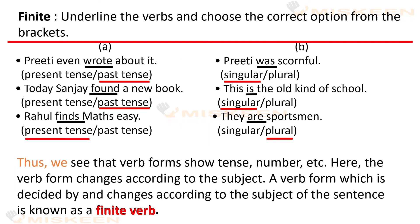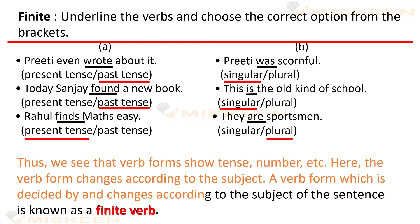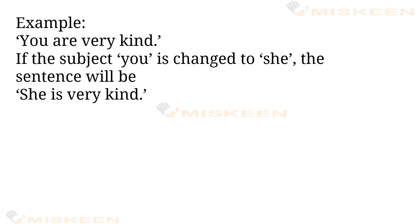Thus, we see that verb forms show tense, number, etc. The verb form changes according to the subject. A verb form which is decided by and changes according to the subject of the sentence is known as a finite verb. Yaani jo verb subject ke hisaab se aur tense ke hisaab se badal jaye use hum finite verb kehte hain. Example: You are very kind — if subject 'you' changes to 'she', the sentence will be: She is very kind — 'are' changes to 'is'.